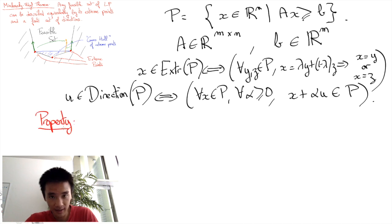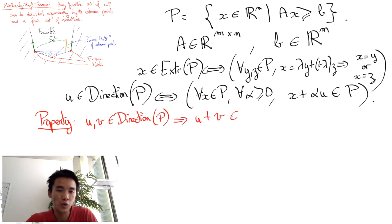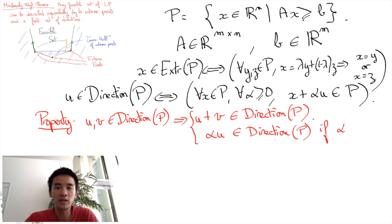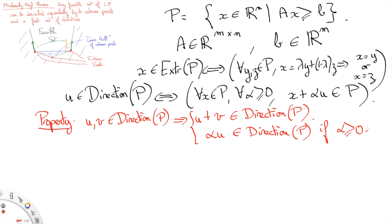Note that it is clear that if u and v are directions of the polyhedron, then so is u plus v. I invite you to verify this formally. Similarly, you can see that if u is a direction, then so is alpha u for any non-negative value alpha. In fact, the set of directions of the polyhedron forms a so-called cone.